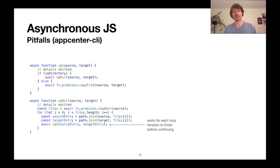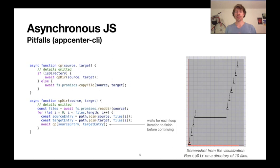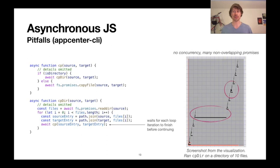This inefficiency is actually manifest in our visualization. When we ran cpdir on 10 files, there are multiple sort of boxes of non-overlapping promises corresponding to each iteration of the loop, which is indicative of a lack of concurrency. Really, you'd want to see many of them stacked together rather than disjoined like this.